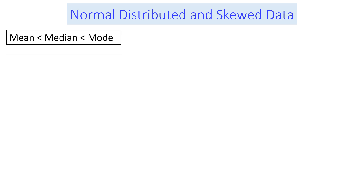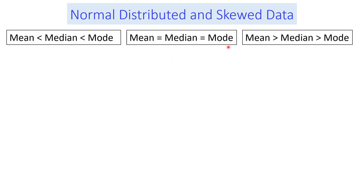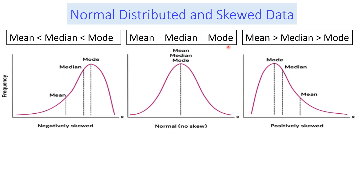Now let us see normally distributed data versus skewed data. In the case of normally distributed data, the mean, median, and mode are equal. But in the case of skewed data, they are not equal. For example, if it is left-skewed or negatively skewed, the mean is less than the median, and the median is less than the mode. This is because the mean is affected by extreme values, which pull the mean below the median and mode.